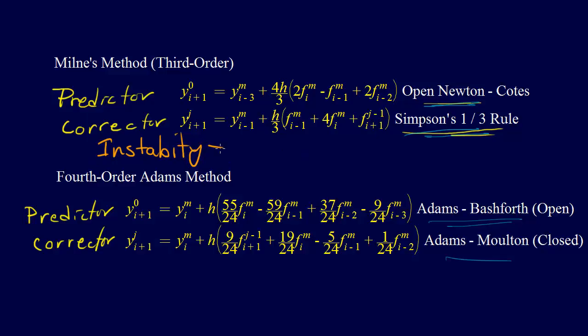This Simpson one-third rule as a corrector is unstable, but we could get around that by developing a stable corrector, and that's called Hamming's method. So, he developed a stable corrector to go along with the open Newton-Coates third order predictor, and so then that was all good, except